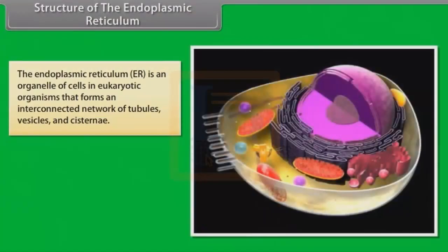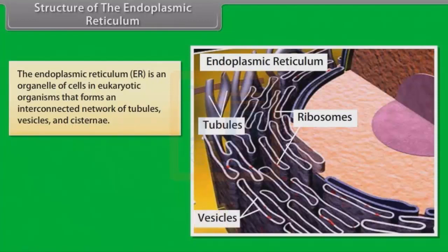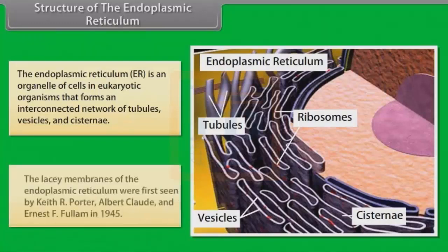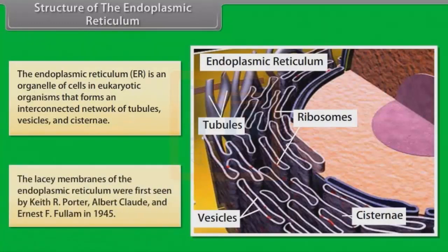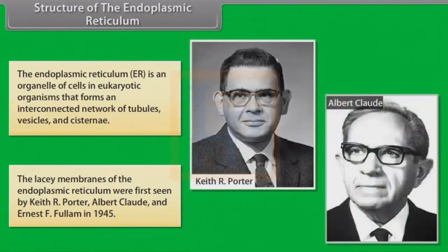The endoplasmic reticulum (ER) is an organelle of cells in eukaryotic organisms that forms an interconnected network of tubules, vesicles and cisternae. The lacy membranes of the endoplasmic reticulum were first seen by Keith R. Porter, Albert Claude and Ernest F. Fullam in 1945.